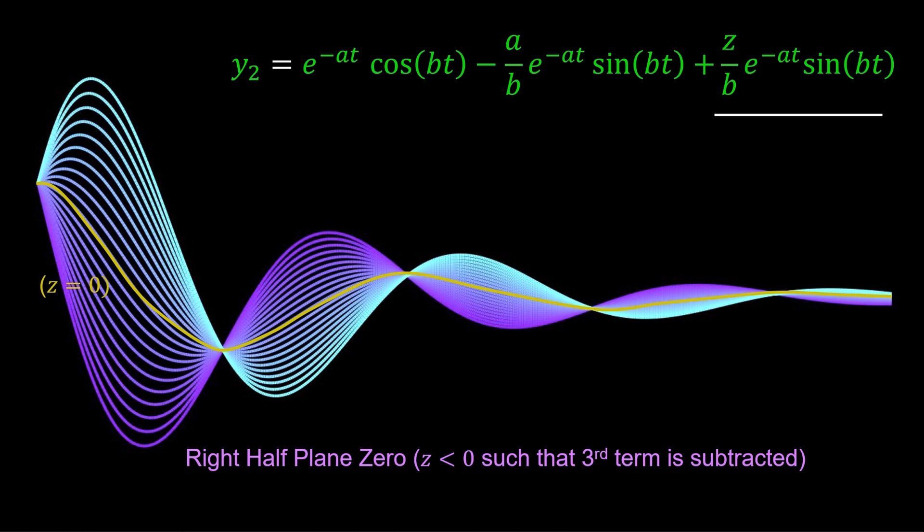This is why the transient response undershoots more as Z becomes more negative. This is also called a non-minimum phase response.